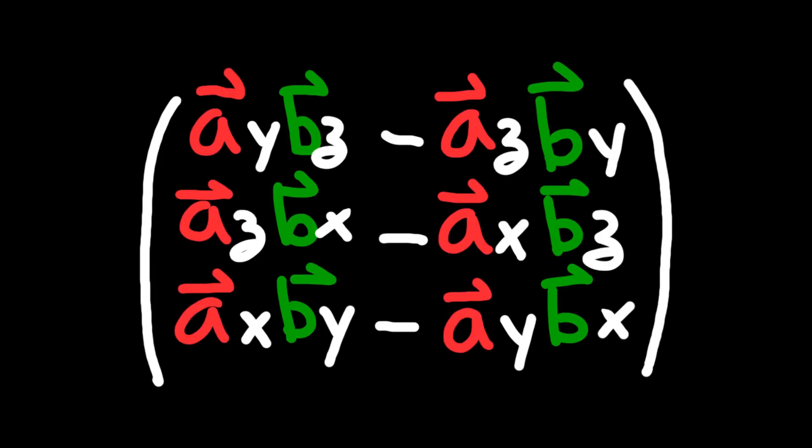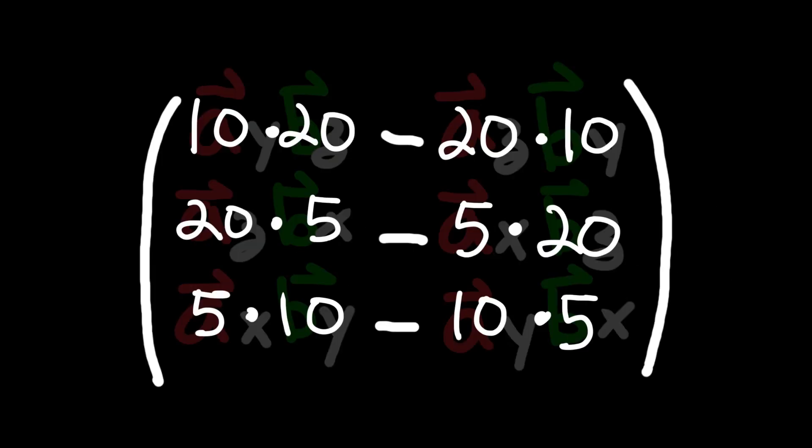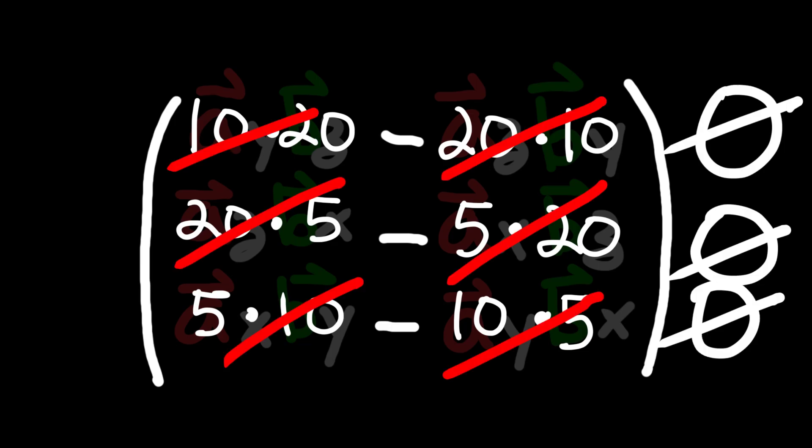Just kidding, if you put two vectors that are the same into the cross product function and try to work through it by hand, you'll start to notice that a bunch of terms are going to be canceling out, and, anticlimactically, the end result is just going to be a zero vector.